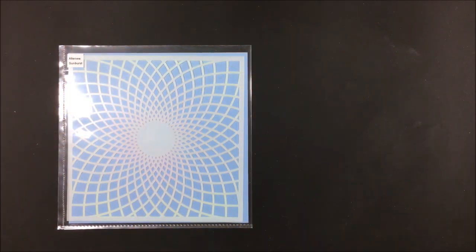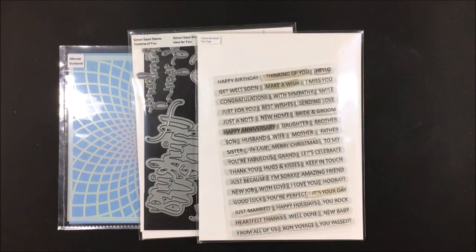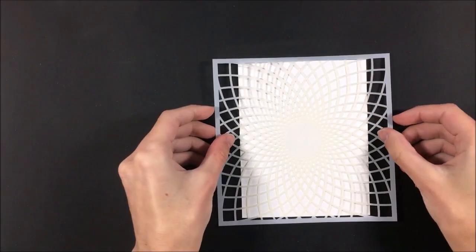For today's card I'm going to be using the Altenew Sunburst Stencil, the Simon Says Stamps Big Friend Dye, Clearly Besotted Tiny Type Stamp Set and some Rena K Designs Electropop inks.